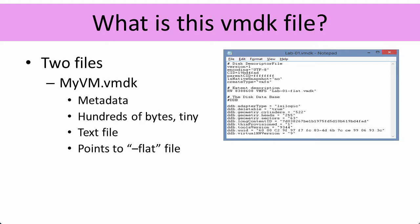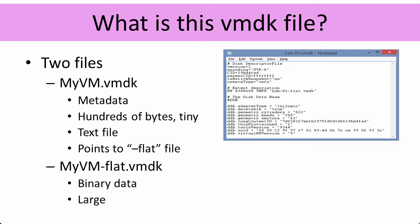This file itself will be a few hundred bytes in size, maybe three or four hundred bytes. It's just metadata, and it points to a flat file. You can see about the middle of it the section that says extent description, and it says there's this flat file. The flat file is the big binary data file — this is where the actual hard drive data of the virtual machine is stored.